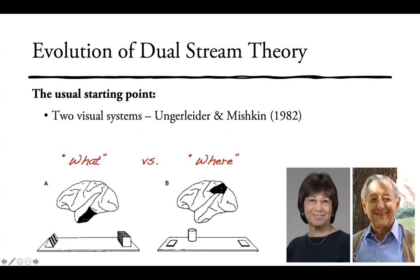The usual starting point for discussions of dual stream theory is the Ungerleider-Mishkin two visual systems hypothesis, proposed in the early 80s. It involved a distinction between a 'what' versus 'where' stream. The what stream was in the ventral temporal regions and the where stream was in the dorsal parietal regions, processing respectively what the object was versus where it was in space.